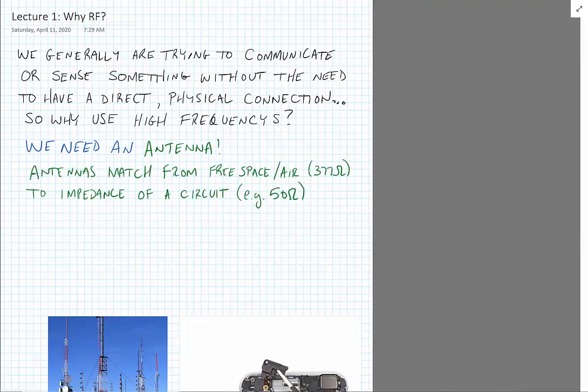An antenna is basically doing an impedance match from free space or air which is about 377 ohms to the impedance of a circuit which can be anything, but in most radio frequency circuits we choose a common reference of 50 ohms.